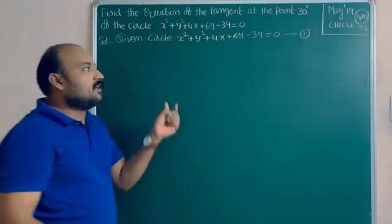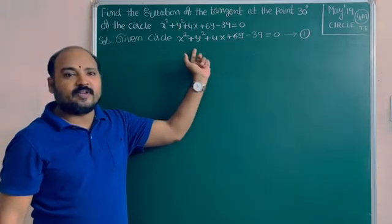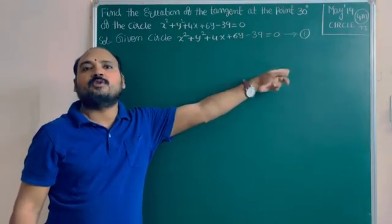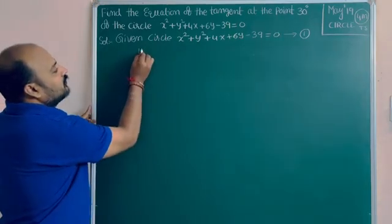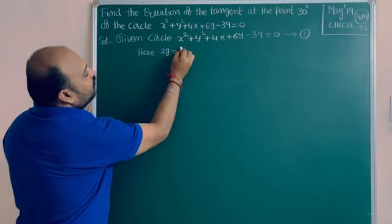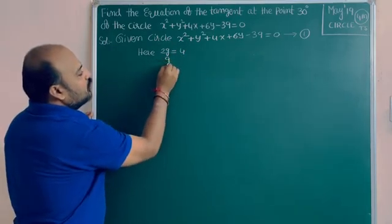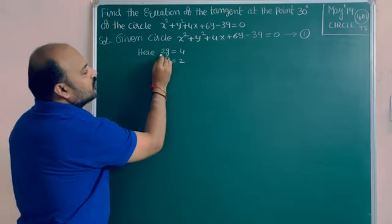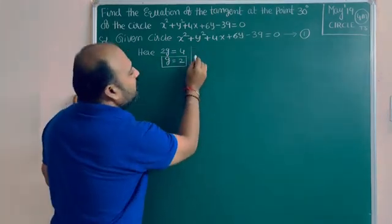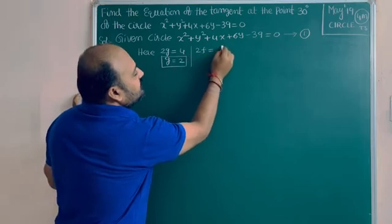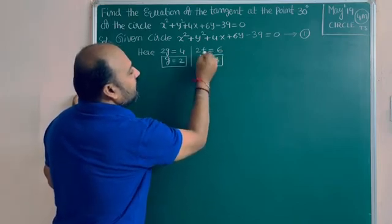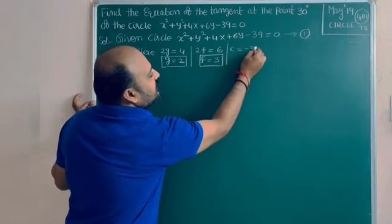Compare this given equation of circle with the standard form x² + y² + 2gx + 2fy + c = 0. Here 2g = 4, so g = 2. Next, 2f = 6, so f = 3. Next, the constant c = -39.